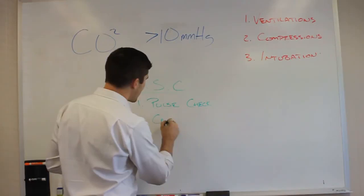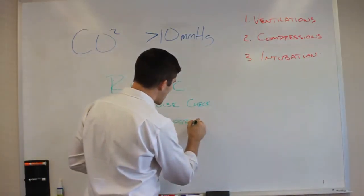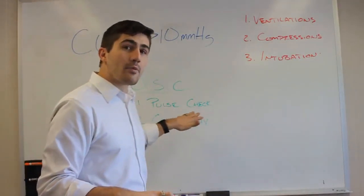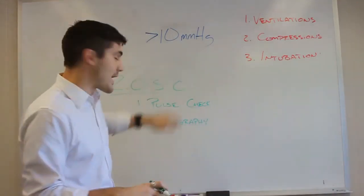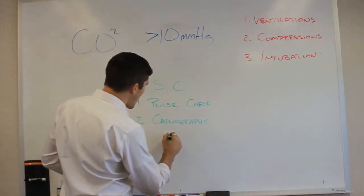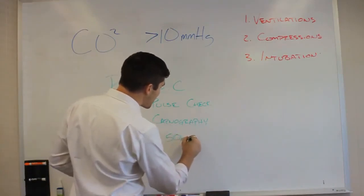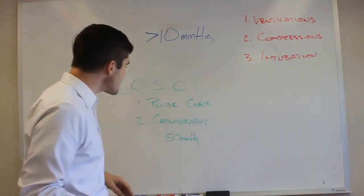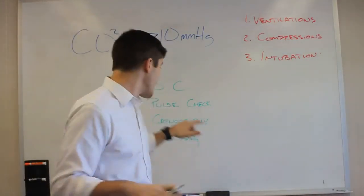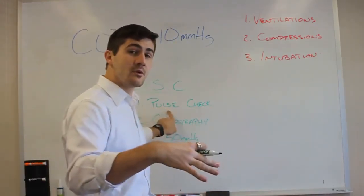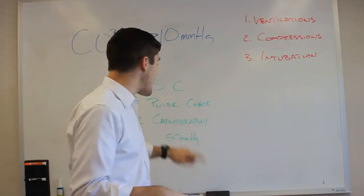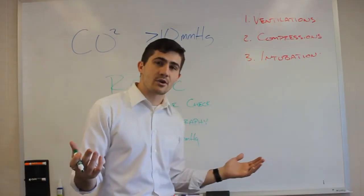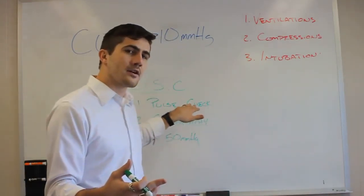When you have capnography, you can actually see when the person goes into ROSC immediately as it happens. Because you're going to see a number spike to about 50 millimeters of mercury. It'll be a significant spike from what they originally were at. And this can happen even in the middle of your compressions, unlike a pulse check where you have to wait to the end of your two-minute cycle to check. You can see this happen at any point during the code. And if you see a spike, you know that you have return of spontaneous circulation, whether or not you can feel a pulse.